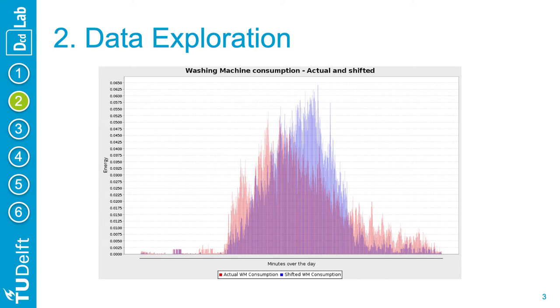Here is an example of actual washing machine consumption in red, accumulated over a week of data, and in blue, the shifted consumption to best fit the local generation.